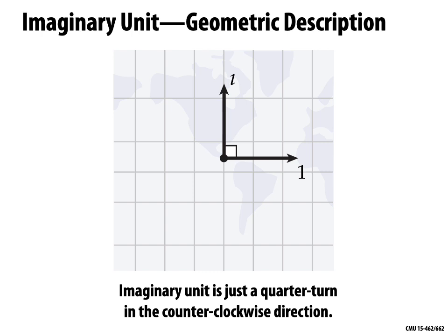Now if I apply i again — the imaginary unit is a quarter turn, so it rotates again, and I get a new vector. Because I got that vector by multiplying i by i, I'll call it i². By inspecting the picture, i² points in the opposite direction from the vector 'one'. So i² = −1. Two quarter turns make a flip — that's it. Applying i again gives i³ = −i, and once more we get back to one.